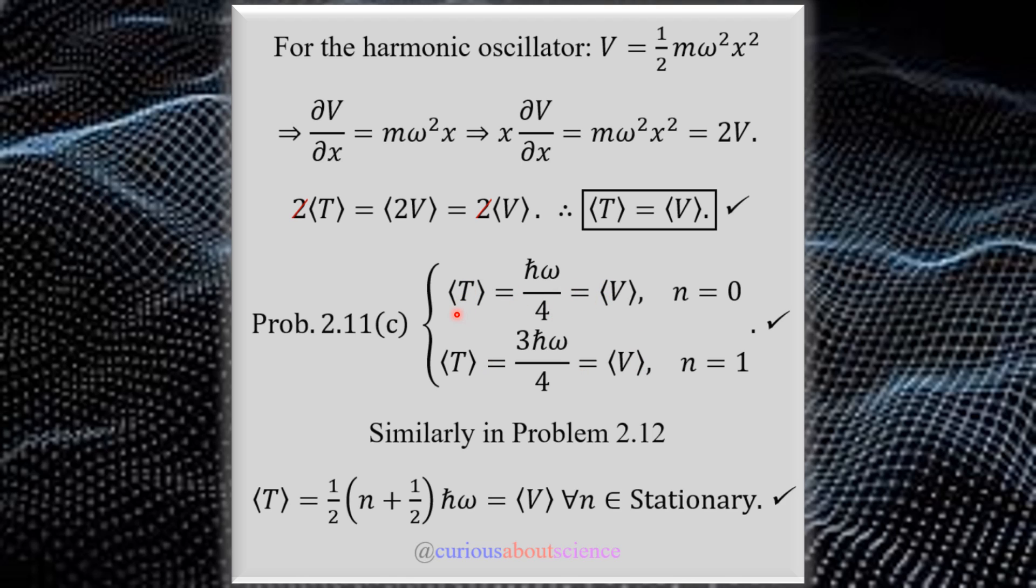Being an oscillator, that kind of makes sense. Whatever we lose in kinetic, we make up for in potential, and vice versa. Think about a spring. If I compress it, I slow down, but the compression leads to more potential, and so I get this constant tradeoff. Pretty cool.